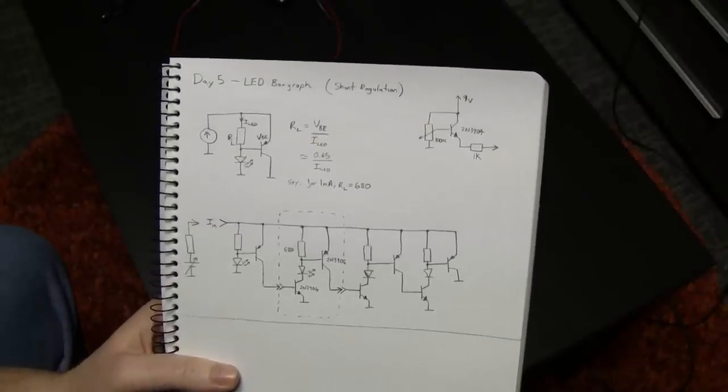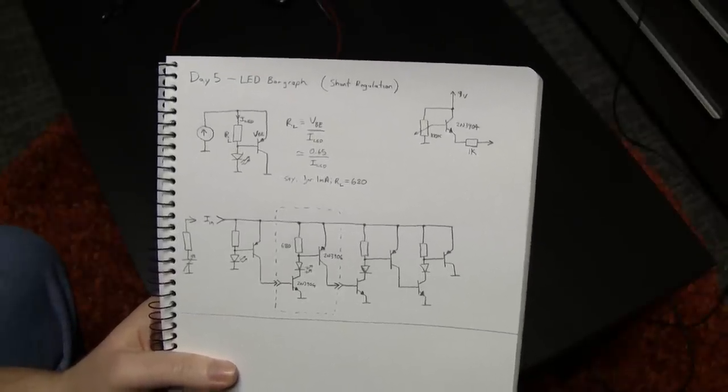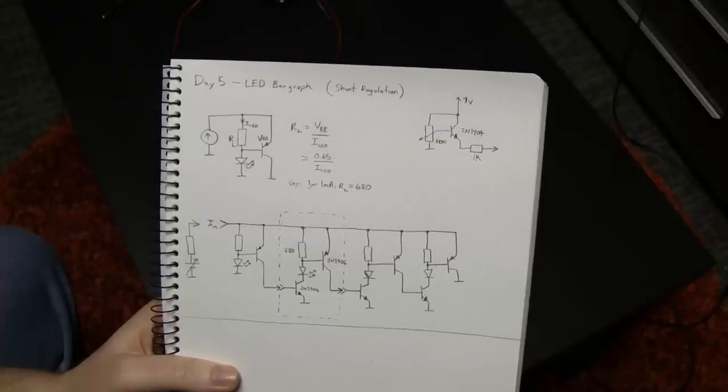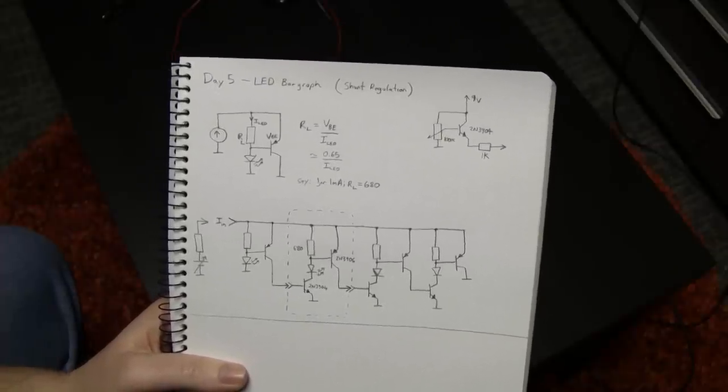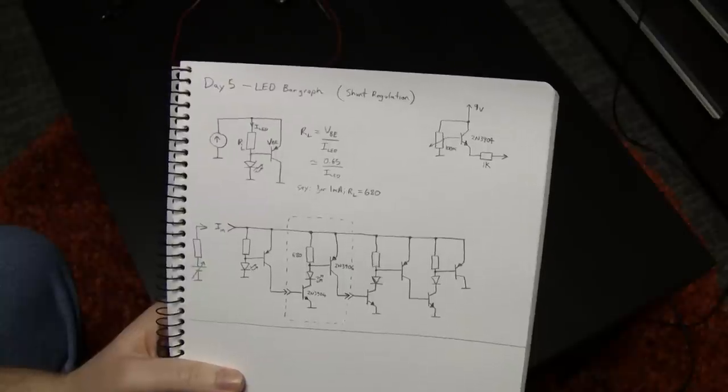G'day everyone. Day five, LED bar graph. This is a pretty simple, straightforward current management circuit using BJTs, bipolar junction transistors. I was playing around with current sources and current mirrors and various other current control related circuits using bipolar junction transistors tonight.